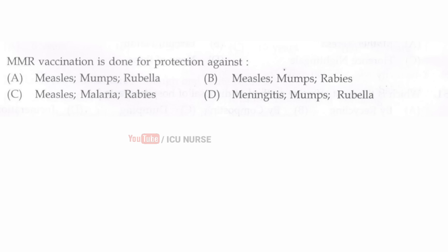MMR vaccination is done for protection against? The correct answer is A — measles, mumps, and rubella.